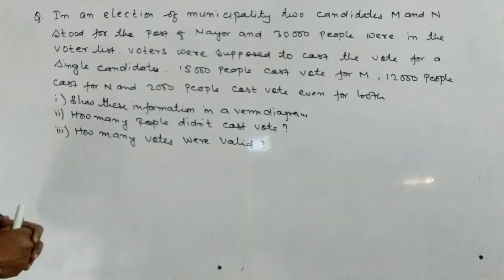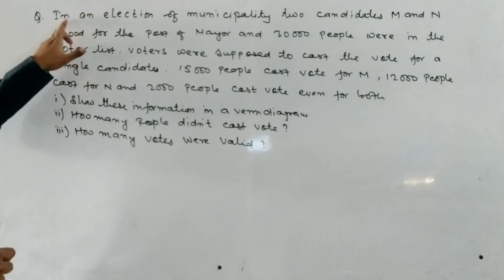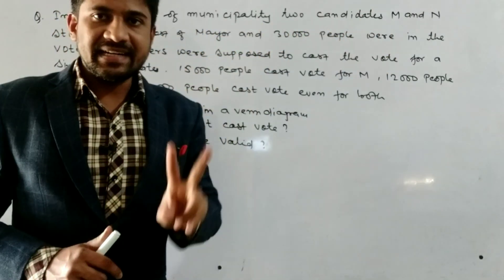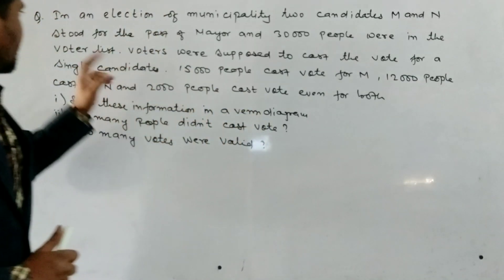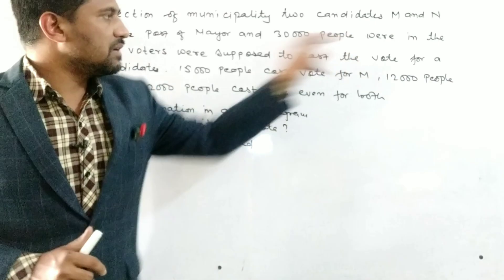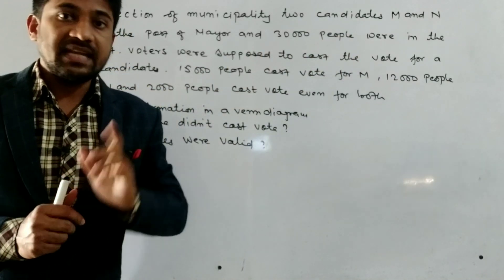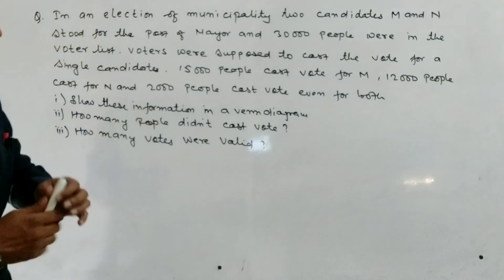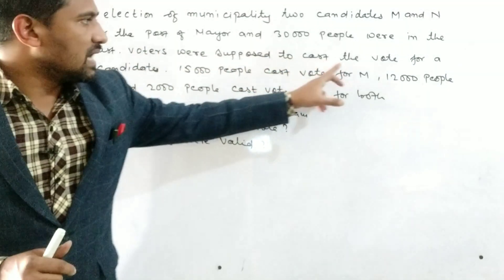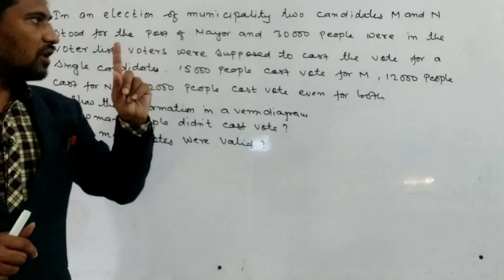We have a question from sets. In an election of a municipality, two candidates M and N stand for the post of mayor. 30,000 people were in the voter list, so the total number of people n(U) is equal to 30,000. Voters were supposed to cast a vote for a single candidate only — either M or N, not both. If someone votes for both, it is invalid.